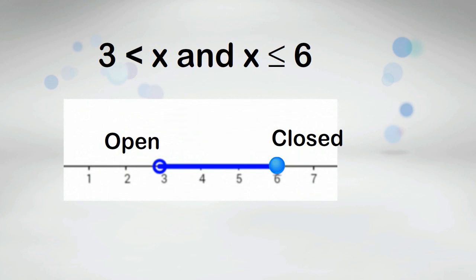3 is less than x and x is less than or equal to 6. The graph of this inequality will be between the two numbers because it uses and.